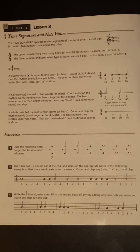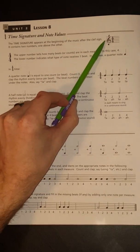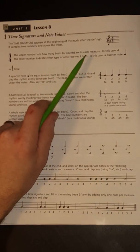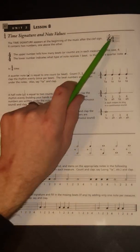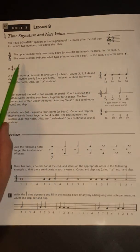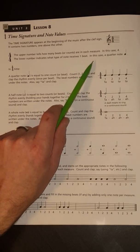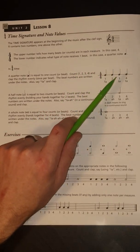The time signature appears at the beginning of the music after the clef sign. We already know what the clef sign is. It contains two numbers, one above the other. The upper number tells how many beats or counts are in each measure, in this case 4. And the lower number indicates what type of note receives the beats, in this case a quarter note.